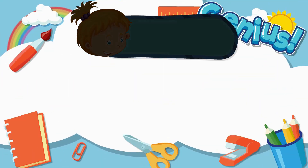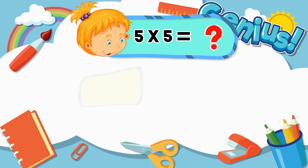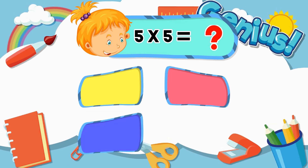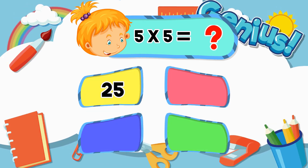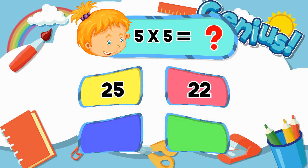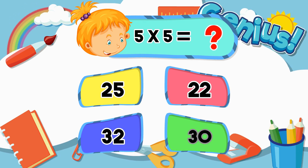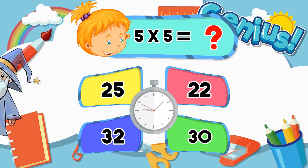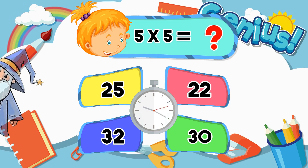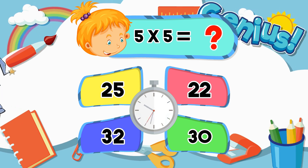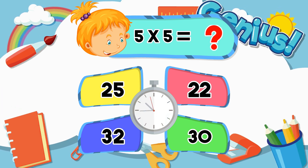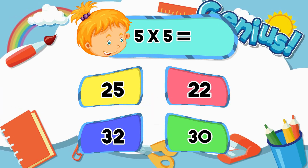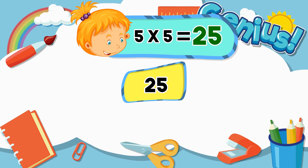What is 5 times 5? Options: 20, 22, 32, 30. Answer: 25.